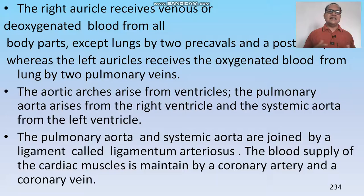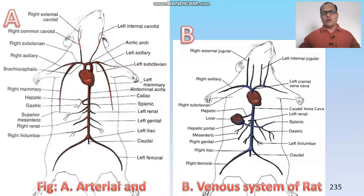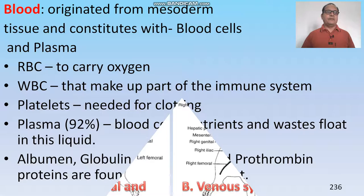The right auricle receives deoxygenated blood, and the left auricle receives oxygenated blood from the lungs. The two ventricles push blood: the right ventricle sends impure blood through the pulmonary arch to the lungs, and the left ventricle sends oxygenated blood through the systemic arch to the body parts.